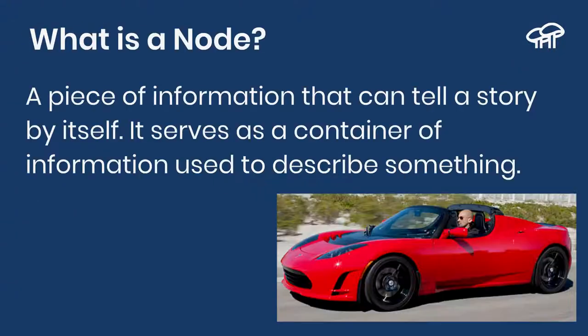Drupal is a CMS, and the C stands for content — this is the most important part of Drupal. Drupal is software that is over 15 years old, and we have some concepts with names that are not very intuitive. One of those is the word Node. Node is the most important concept in Drupal, and also one of the most confusing. A Node is a piece of information that can tell a story by itself, serving as a container to describe something. For example, I have a car — it is red, has two doors, it is an electric car, you can say the year, make, model, plate, and so on. You can describe something tangible like a car, or something intangible like an event. Anything can be stored in a Node.